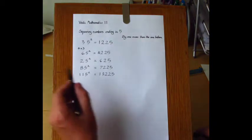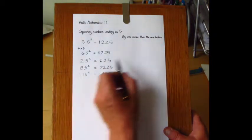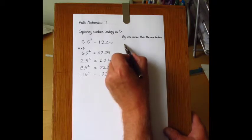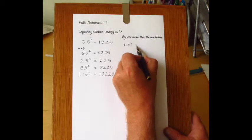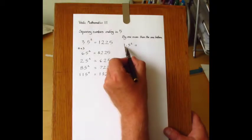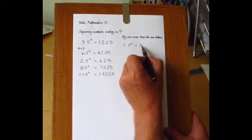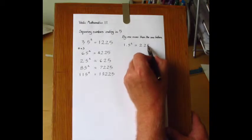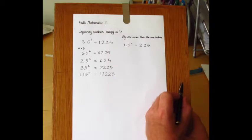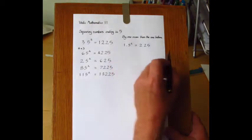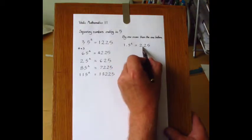But it can be useful also for squaring decimal numbers like 1.5 squared. So treat it as 15 squared: 1 times 2 is 2, and put down 25, giving 225. And then figure out where the decimal point goes. We have 1 decimal digit here, and so we double that number of decimal digits to give 2. So it's 2.25.